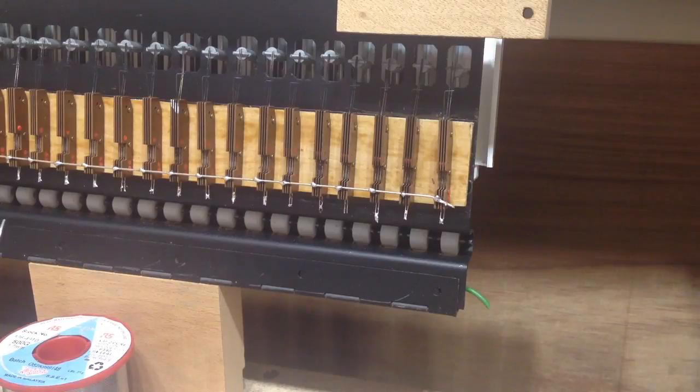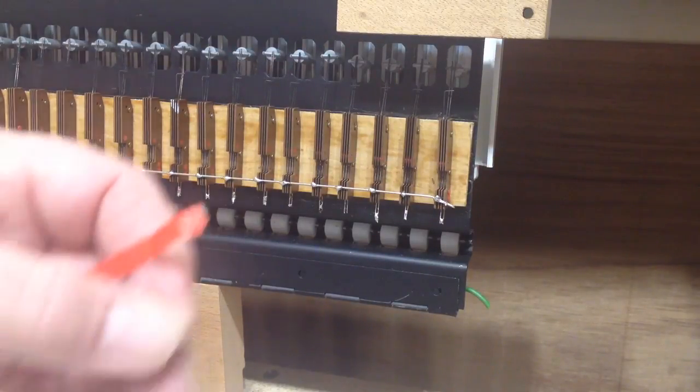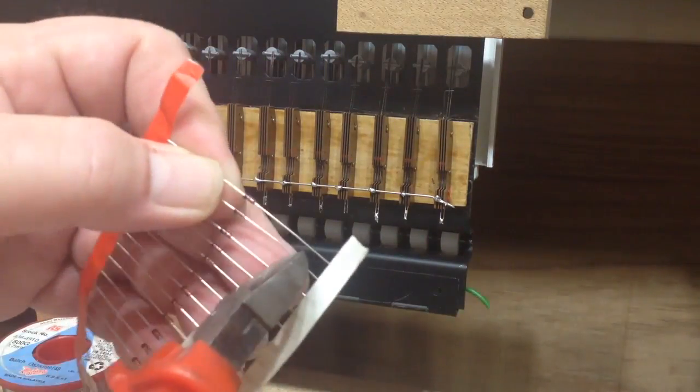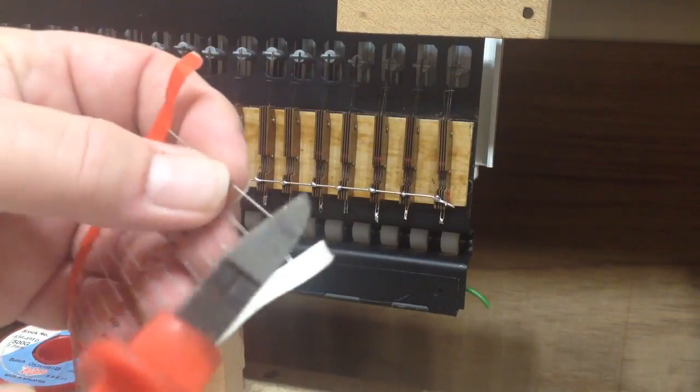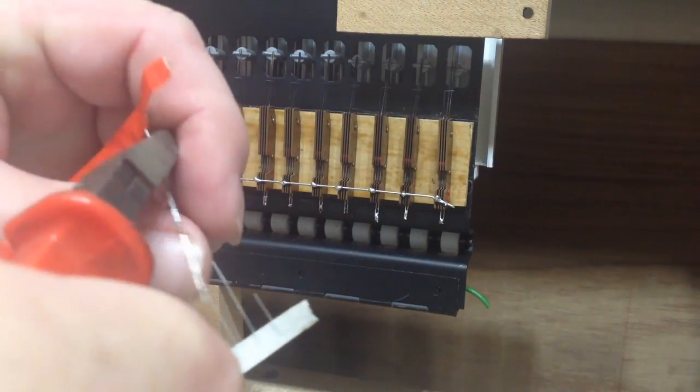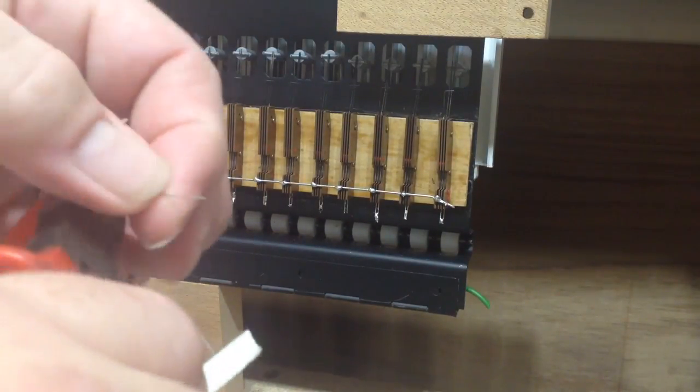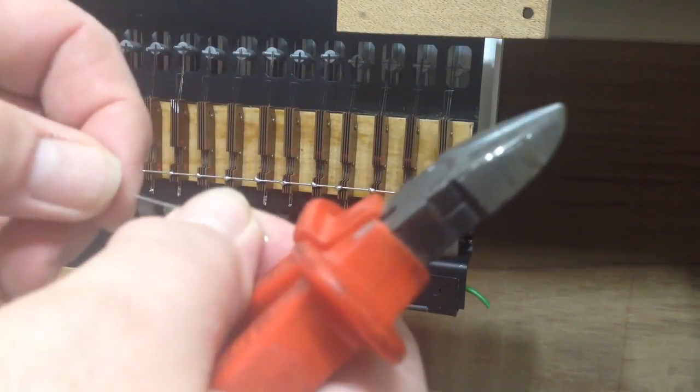So, it's time to start connecting our diodes to our keys now. If we take a diode, just cut it away from the strip that it's in, just snip either end so that we're left with one single diode.